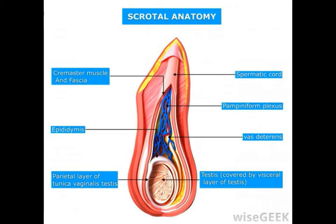Each of these cells contains 46 chromosomes, and through mitosis, the spermatogonia will then divide into sets of four spermatids. The four spermatids each contain only half the deoxyribonucleic acid, or DNA, needed to make a human being — 23 chromosomes.